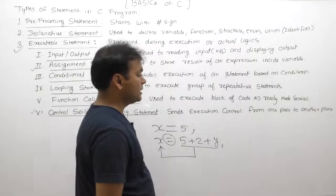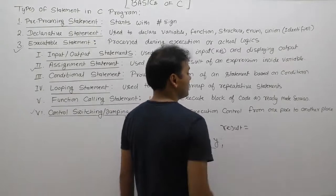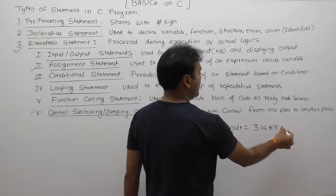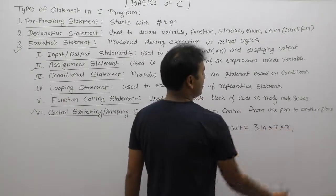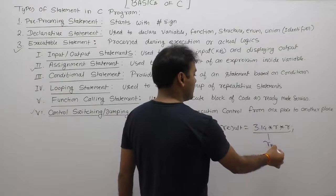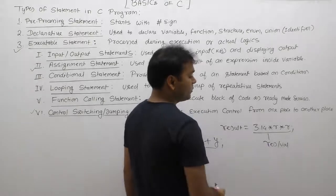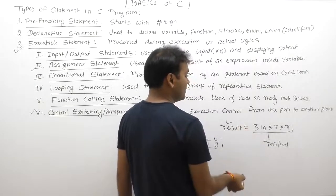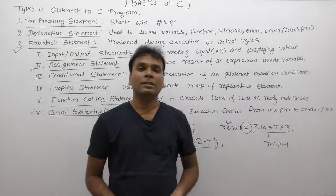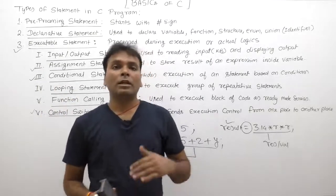For example, to calculate the area of a circle, the formula expression is 3.14 multiplied by r multiplied by r. This expression generates a result value, which is then stored into a variable using the assignment operator for operational purposes — this kind of statement is considered an assignment statement.